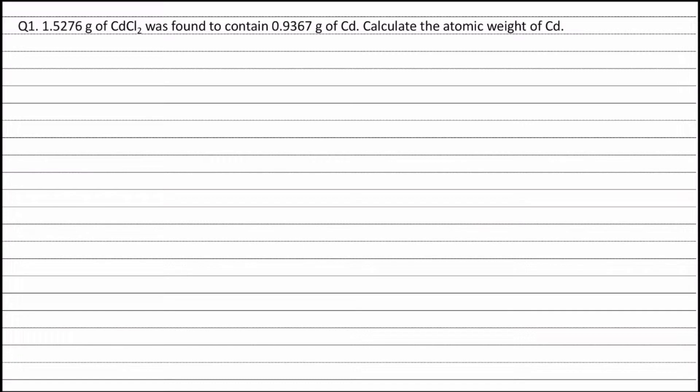Chapter 4, Question 1. 1.5276 grams of cadmium chloride was found to contain 0.9367 grams of cadmium. Calculate the atomic weight of cadmium.